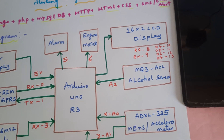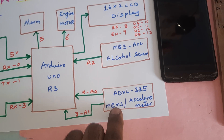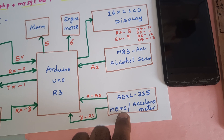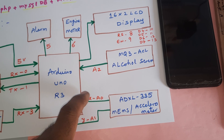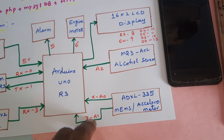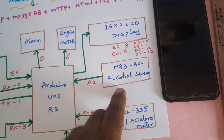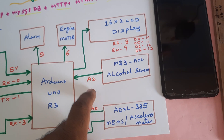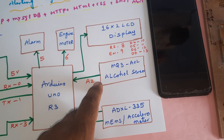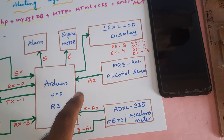We are using the ADXL335 MEMS accelerometer sensor connected to analog pins A0 and A1, and the MQ3 alcohol sensor connected to A2. Whenever alcohol is detected, it will send an SMS alert as well as an email alert and update the data onto the server.